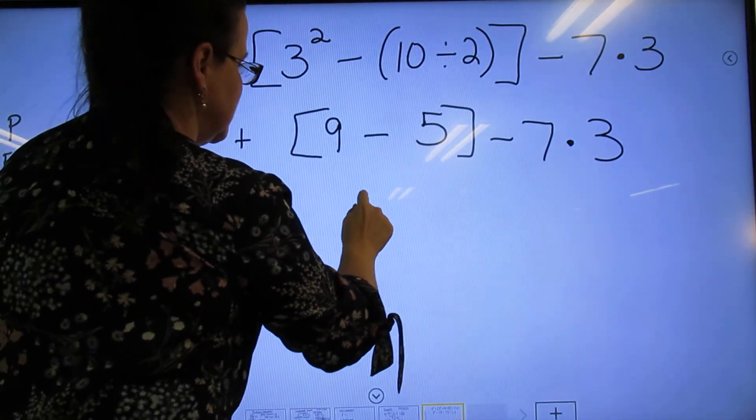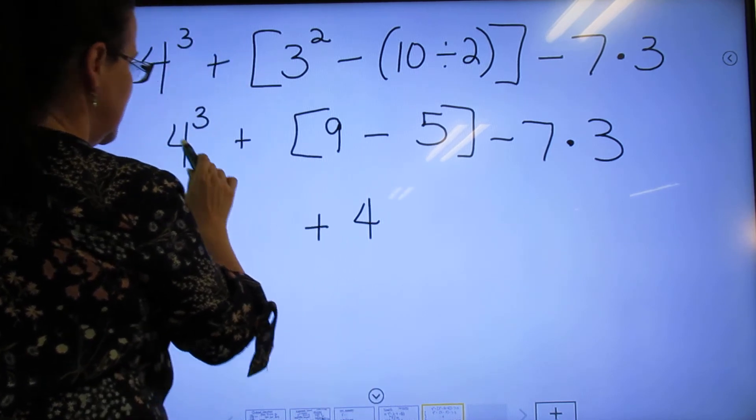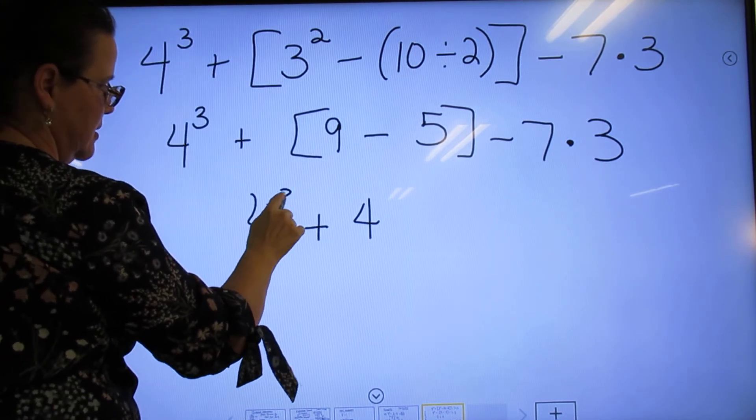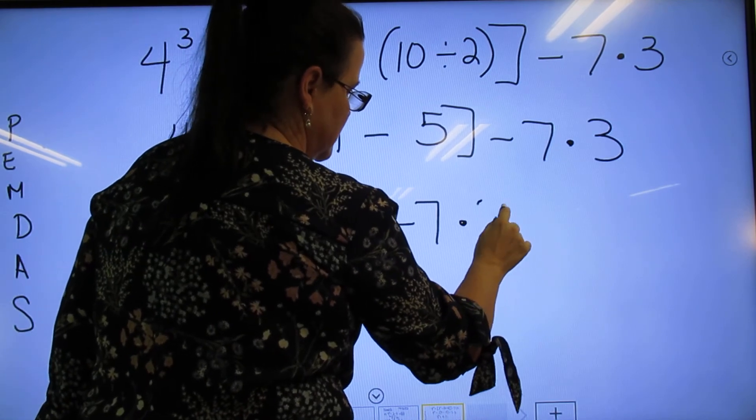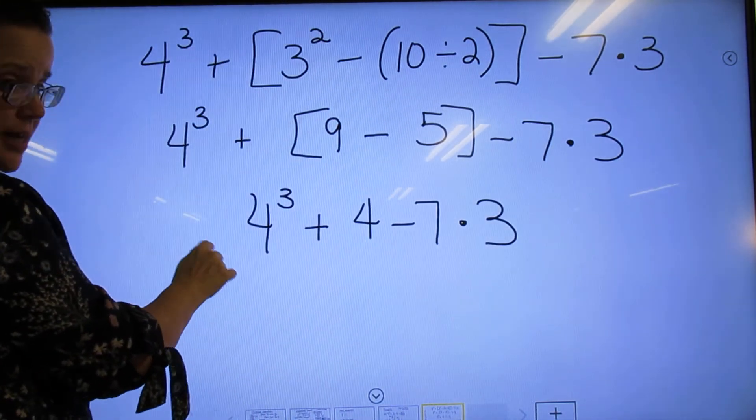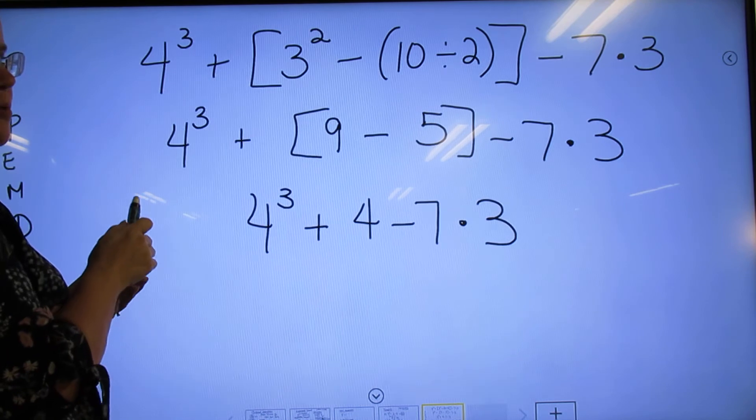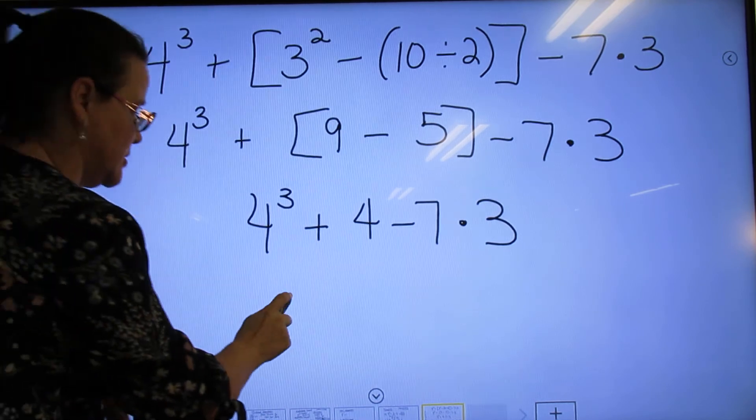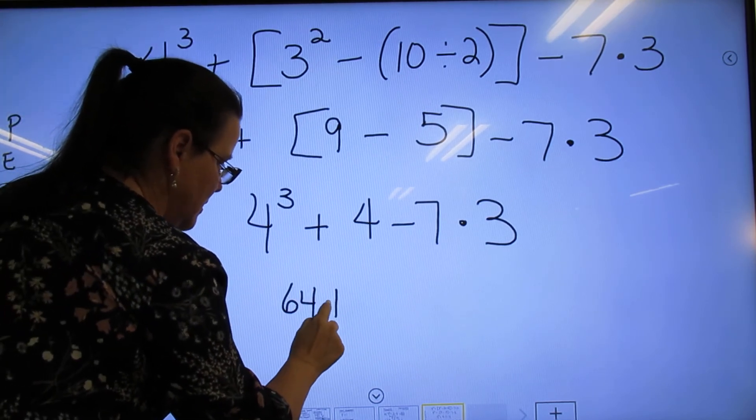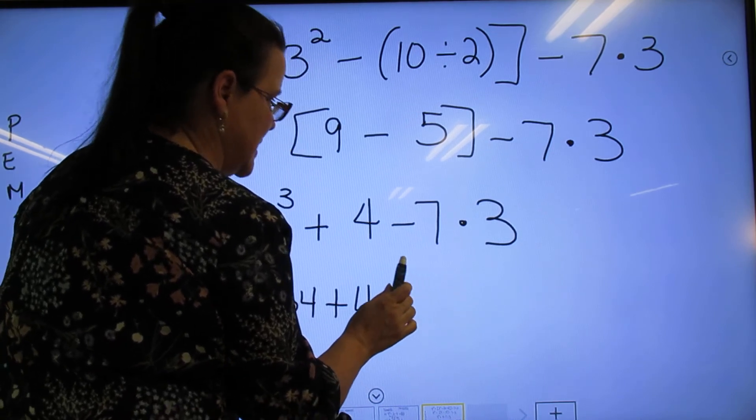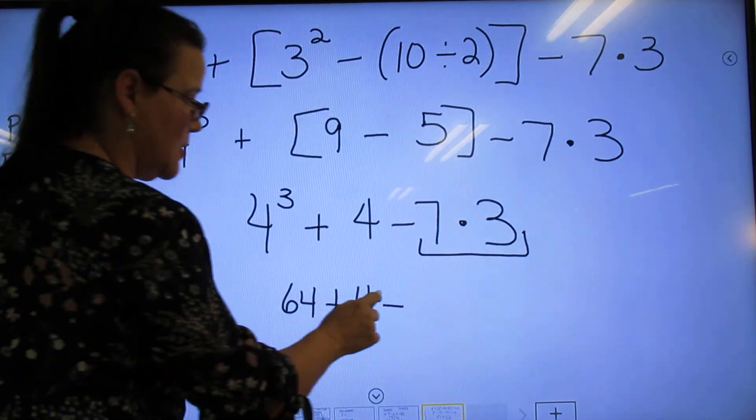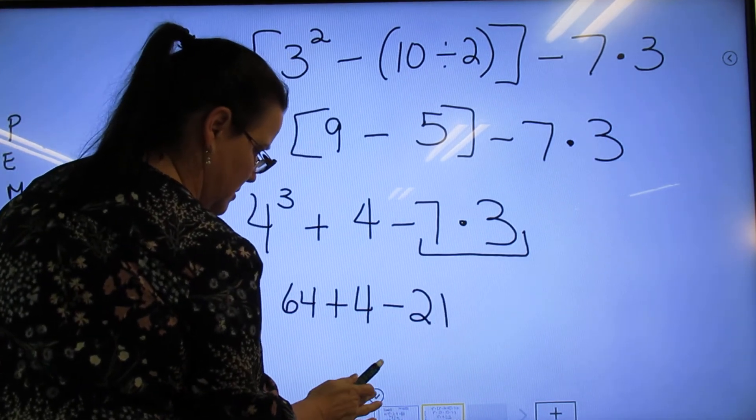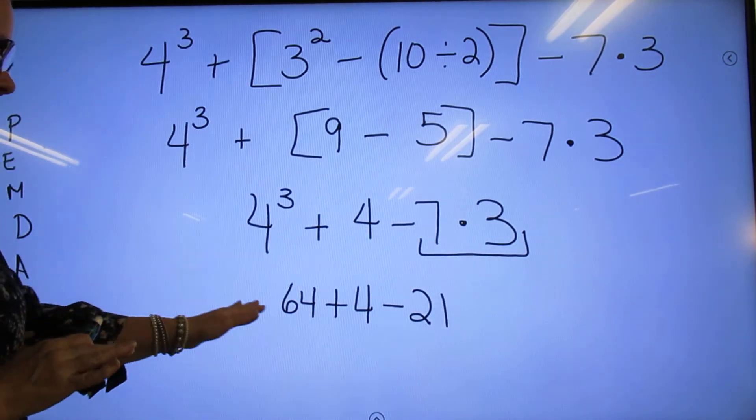Then 9-5 is 4 plus 4³, and then -7×3. Well, we have to do the exponents. So 4×4 is 16, and 16×4 is 64, plus 4, and then -7×3 would be 21.